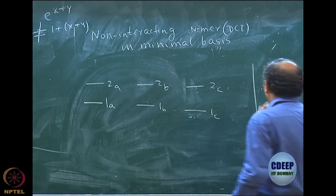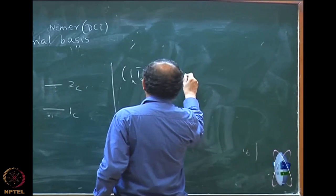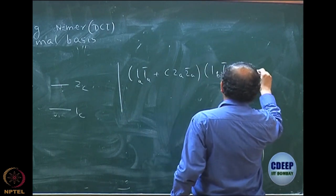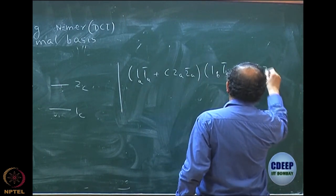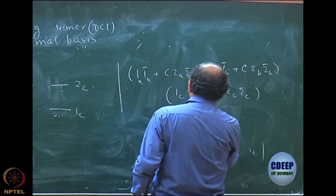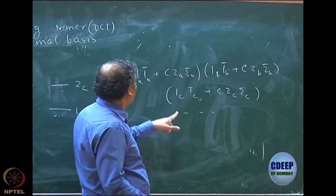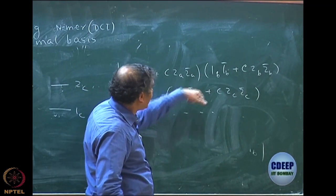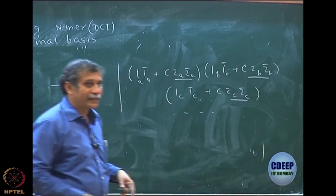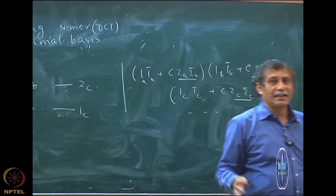If you look at the wave function, it will have |1A, 1A̅⟩ + C|2A, 2A̅⟩, then again |1B, 1B̅⟩ + C|2B, 2B̅⟩, and so on into |1C, 1C̅⟩ + C|2C, 2C̅⟩ and so on. So all these n terms will be there. The first term is of course Hartree-Fock, no problem. Then you have only doubly excited terms you can pick out, but there will be terms which are hextuple excited. So there will be lots of terms which will be missing, and quite clearly the result is even more hopeless.